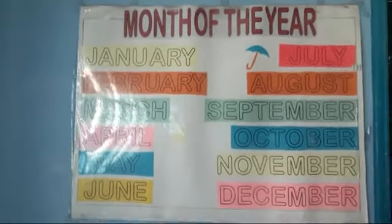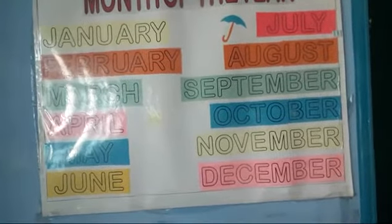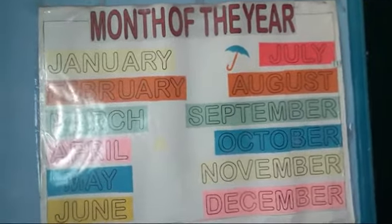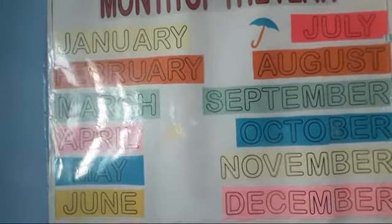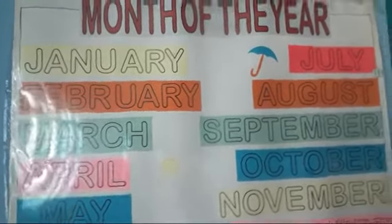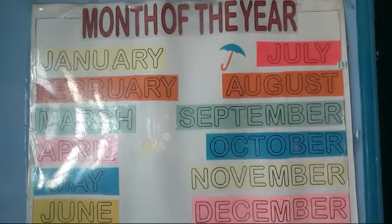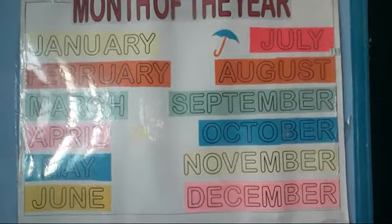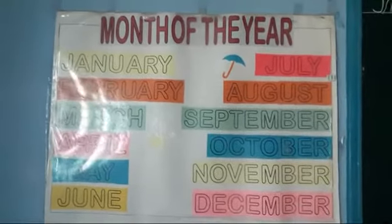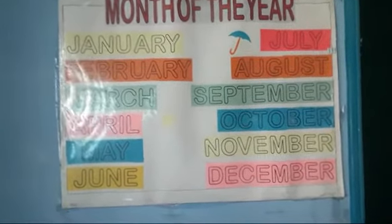Now children, which month has the fewest days? Which month has the fewest days? Yes — February. February has 28 or 29 days. And the rest of the months have 30 or 31 days. Correct, children.